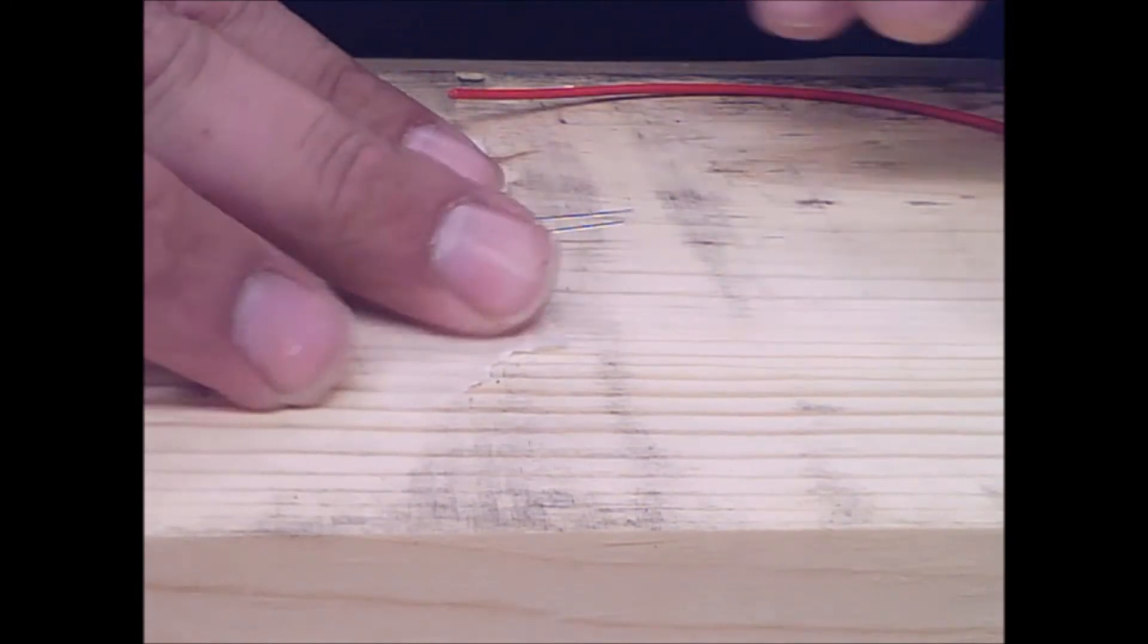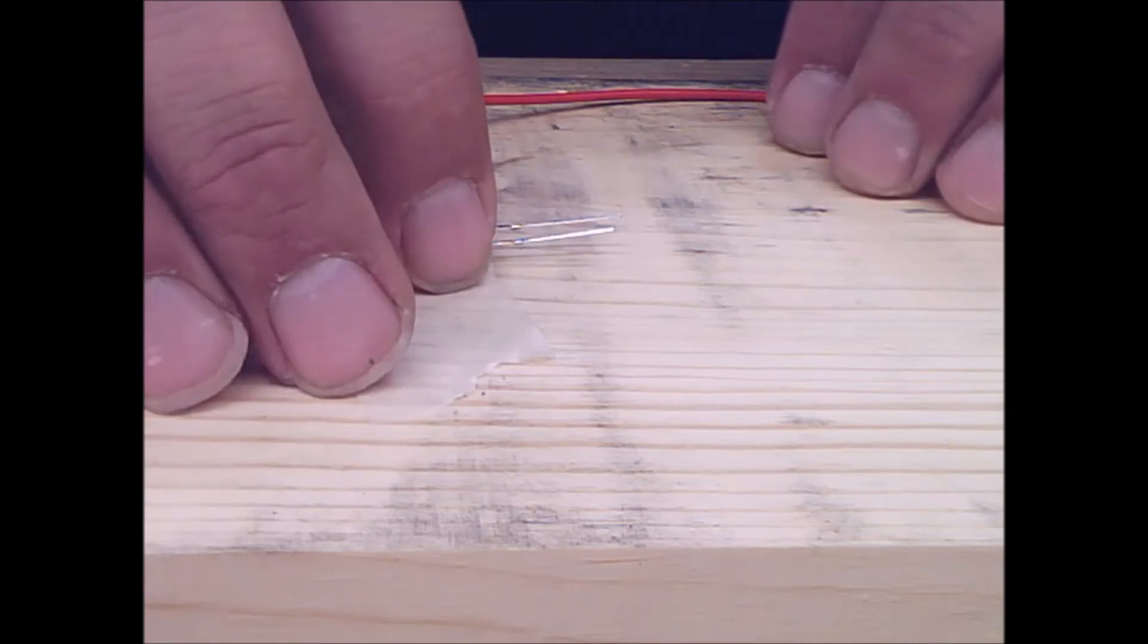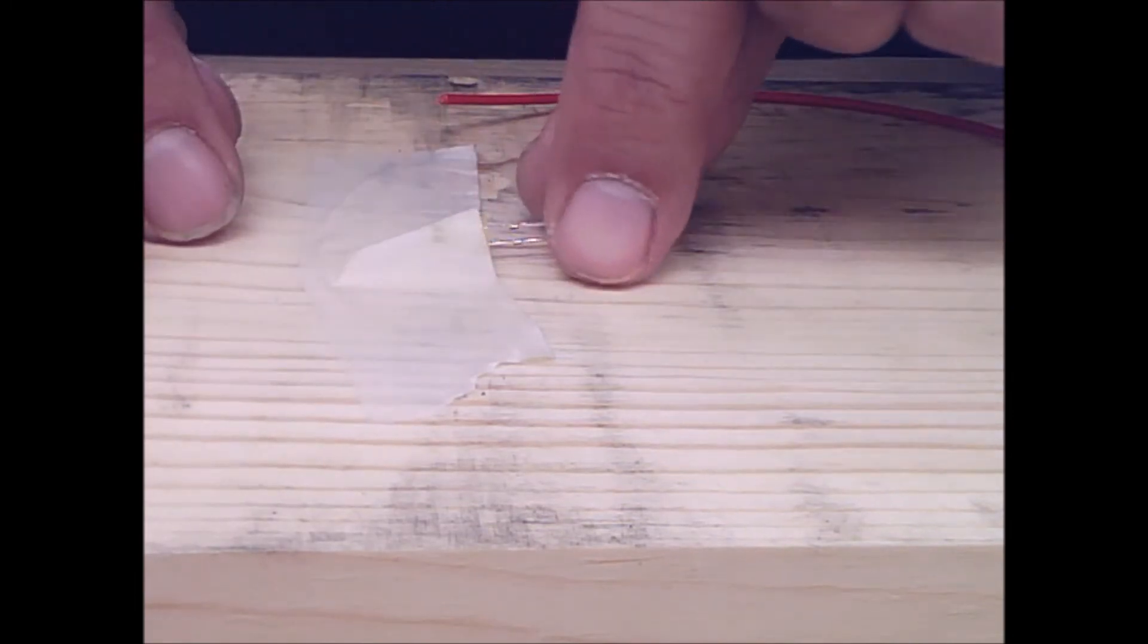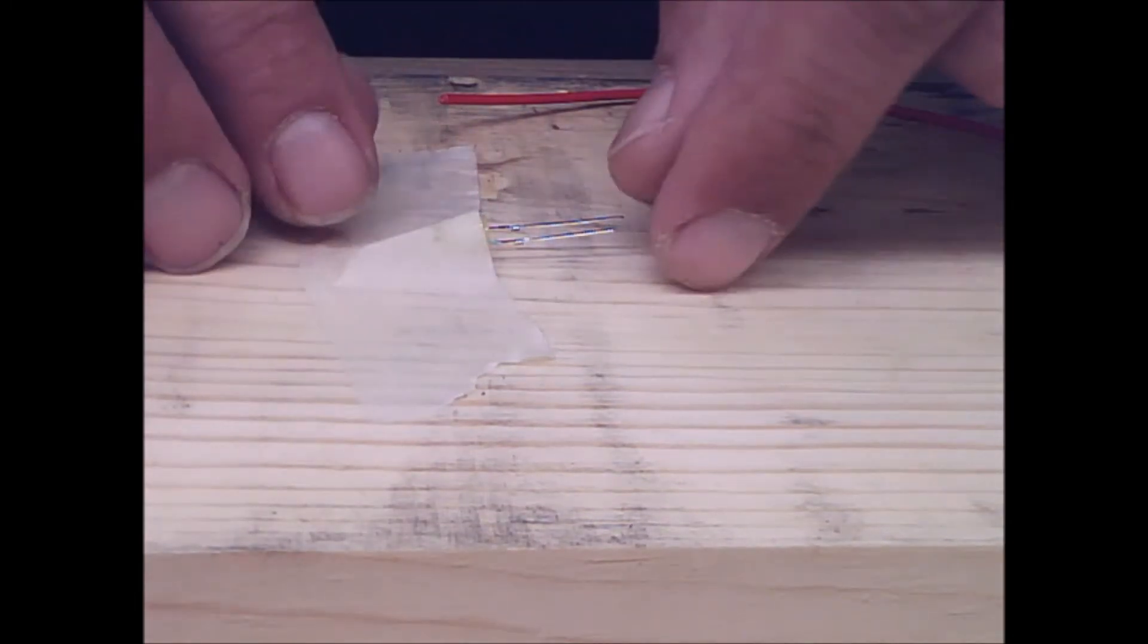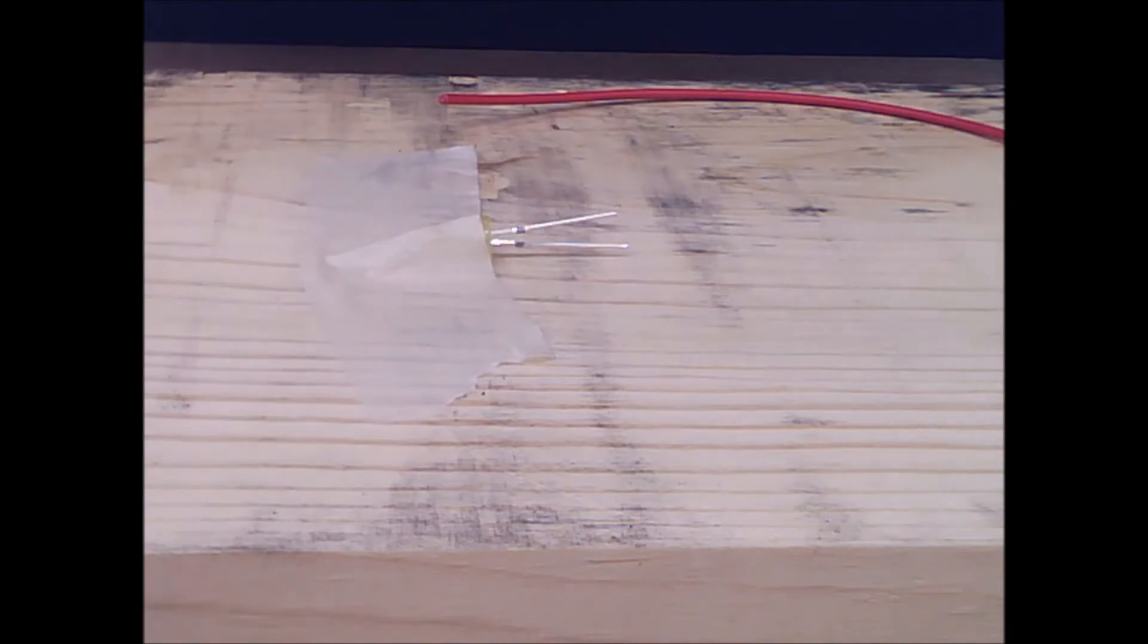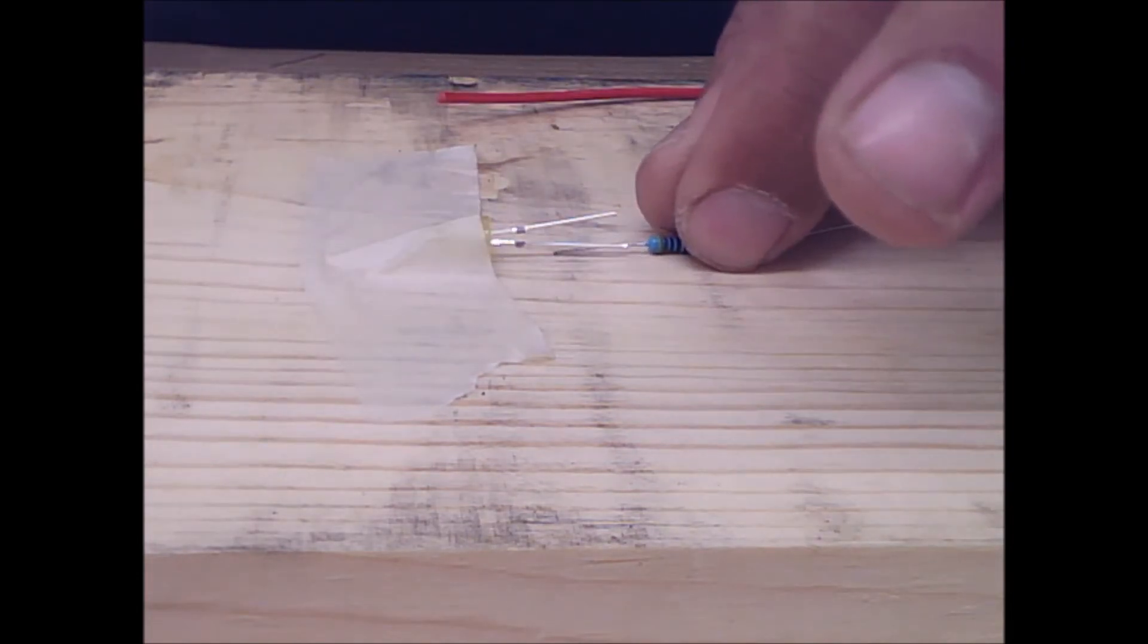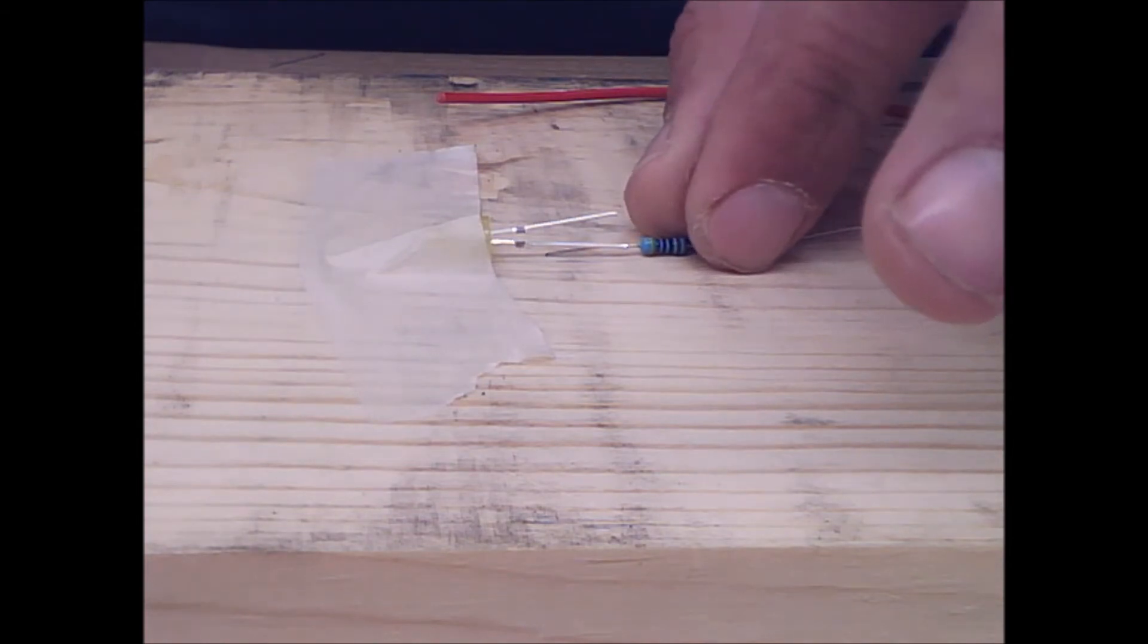I'm going to put that onto the positive lead. You can see that one of the leads on the LED is longer, and that's the one that I'm going to use to solder the resistor to. Sometimes you can get away with just setting it down, and that looks like it will do nicely.